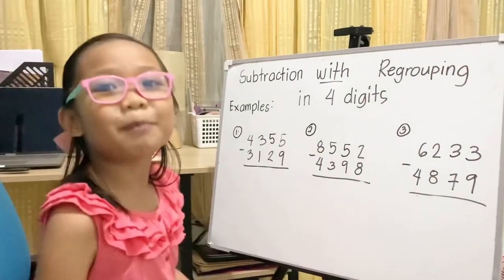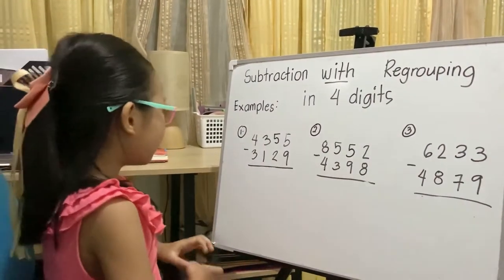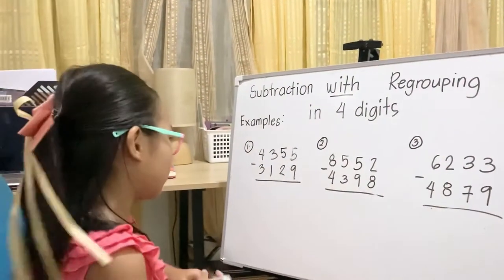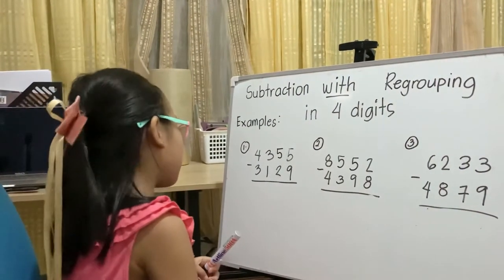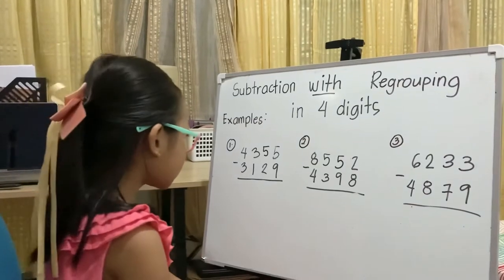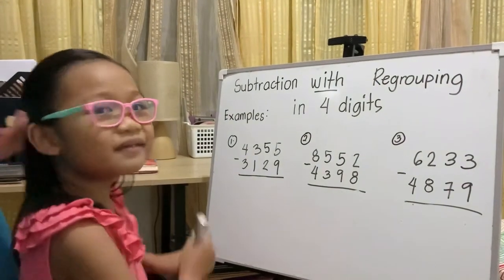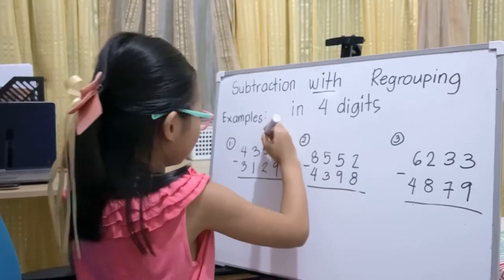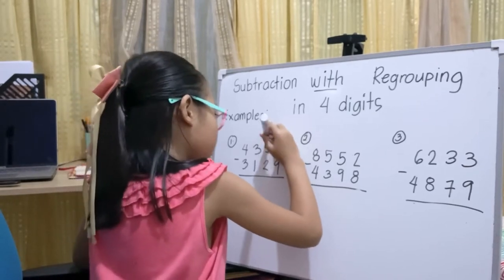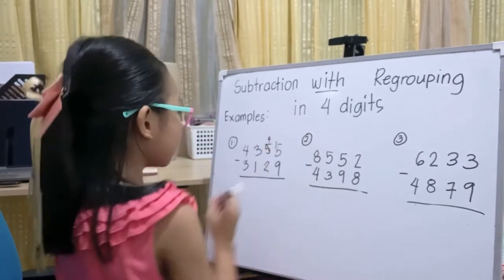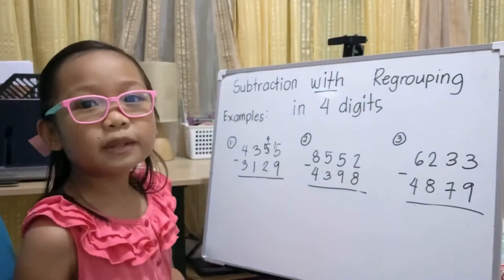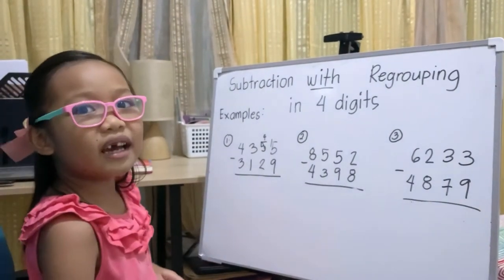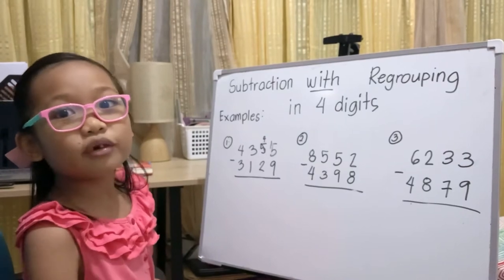Example number one: 4,355 minus 3,129. Five becomes 15, and the other five becomes four.